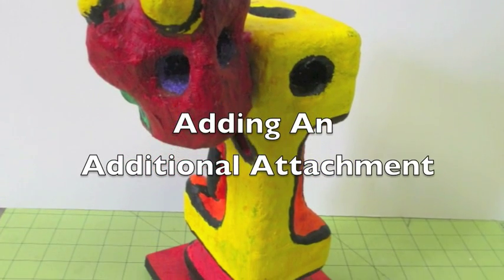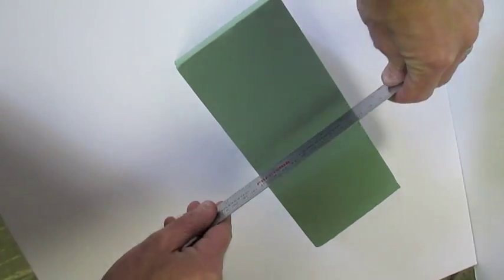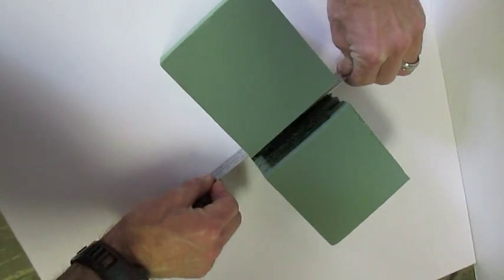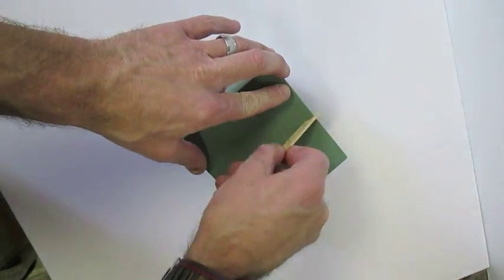Adding additional attachments. Use a metal ruler to cut your foam block in half or into pieces. Make your design lines with a popsicle stick.